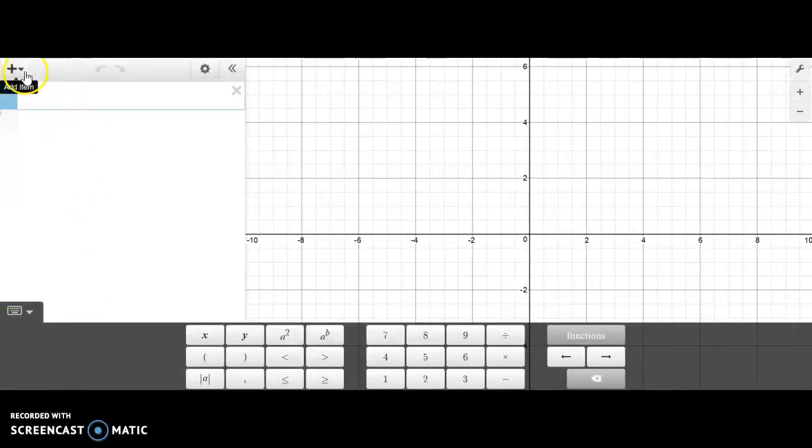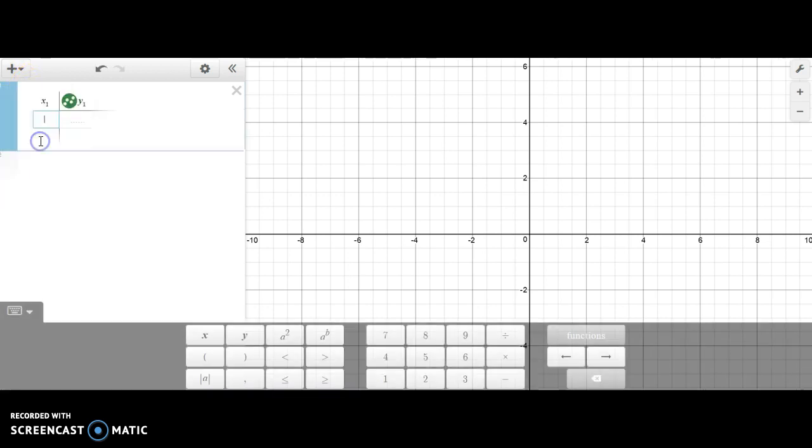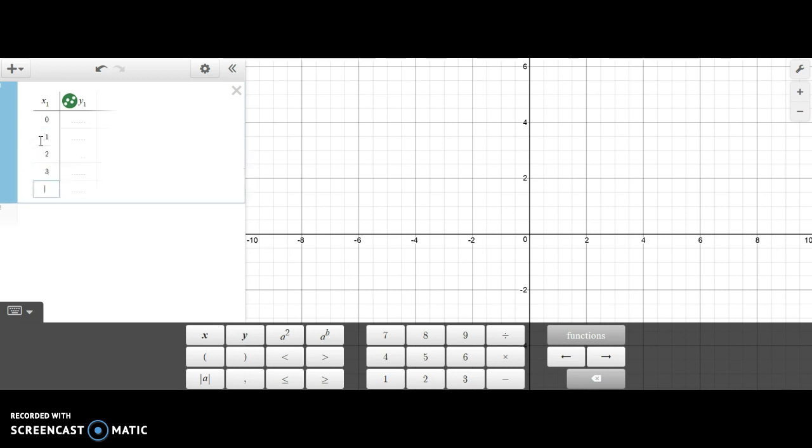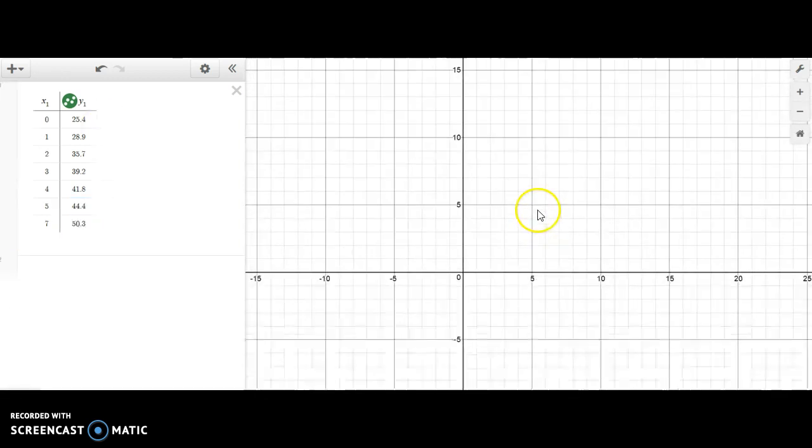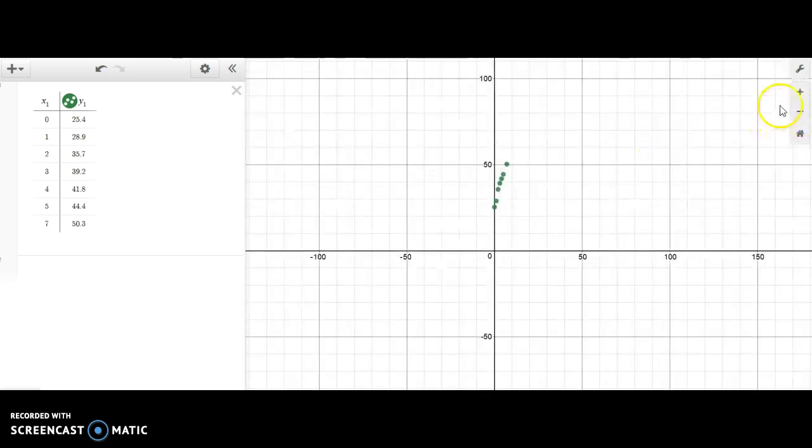Now that we're in Desmos, I'm going to select an item, a table in particular, and I'm going to let my x values be zero, one, two, three, four, five, and seven based on the data that's given in the table. And I'm going to let the y values represent the number in millions of households who have high-speed internet. Okay, we can't see our data points so I'm going to zoom out a little bit here to see if we can't find them. Oh, there they are.